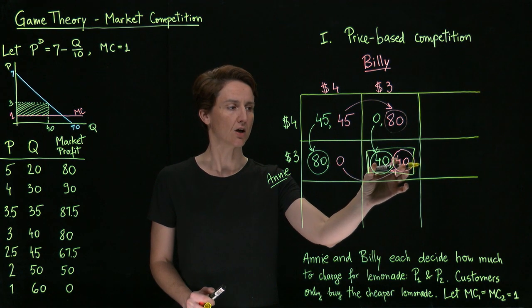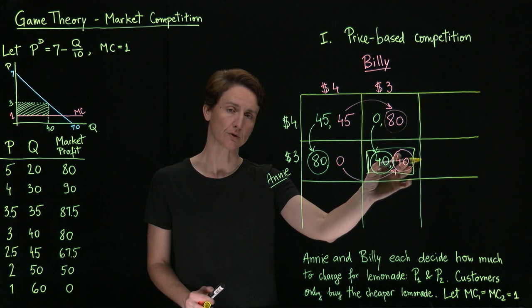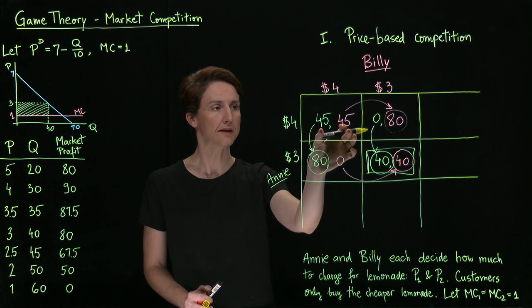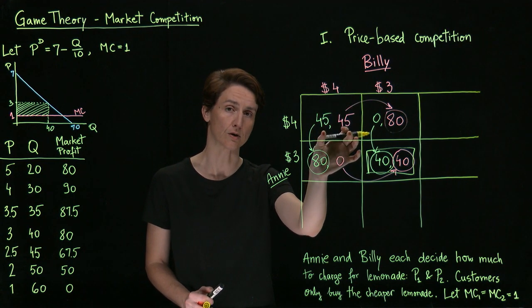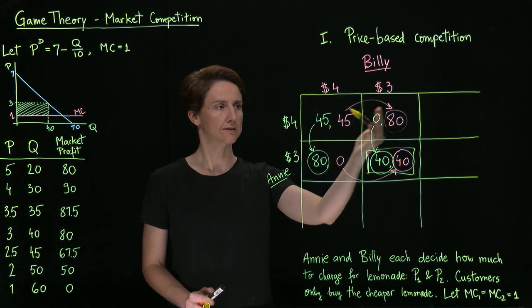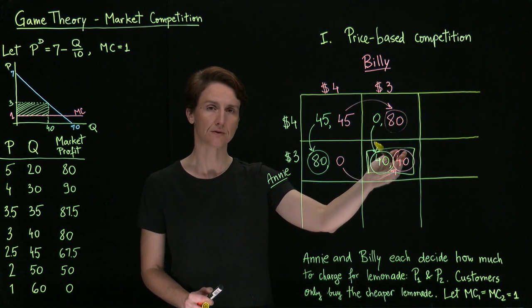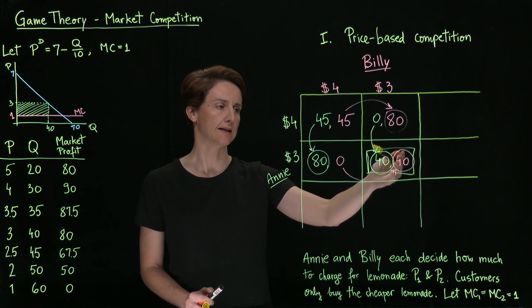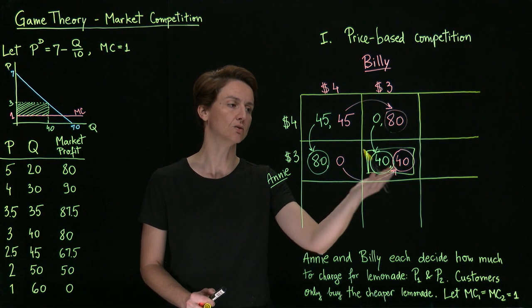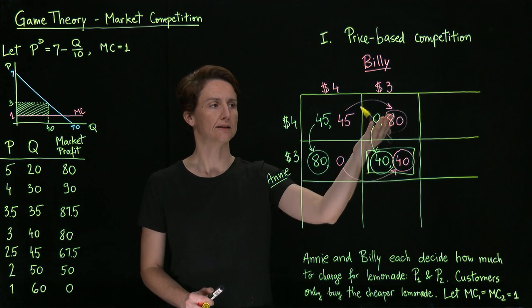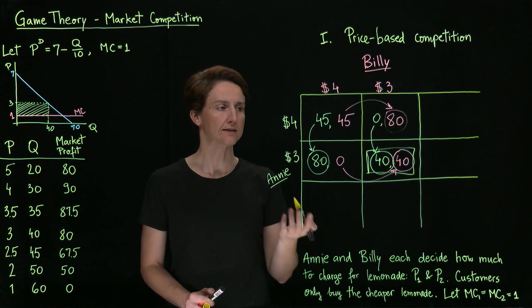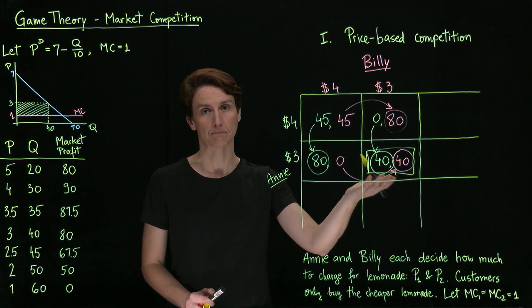This is not the optimal outcome for them. Jointly, what would be better is if they could both price at $4. However, when considered separately, each of them individually has the incentive to undercut the other's price, so the result is that they both earn lower profits. This is a type of prisoner's dilemma game.